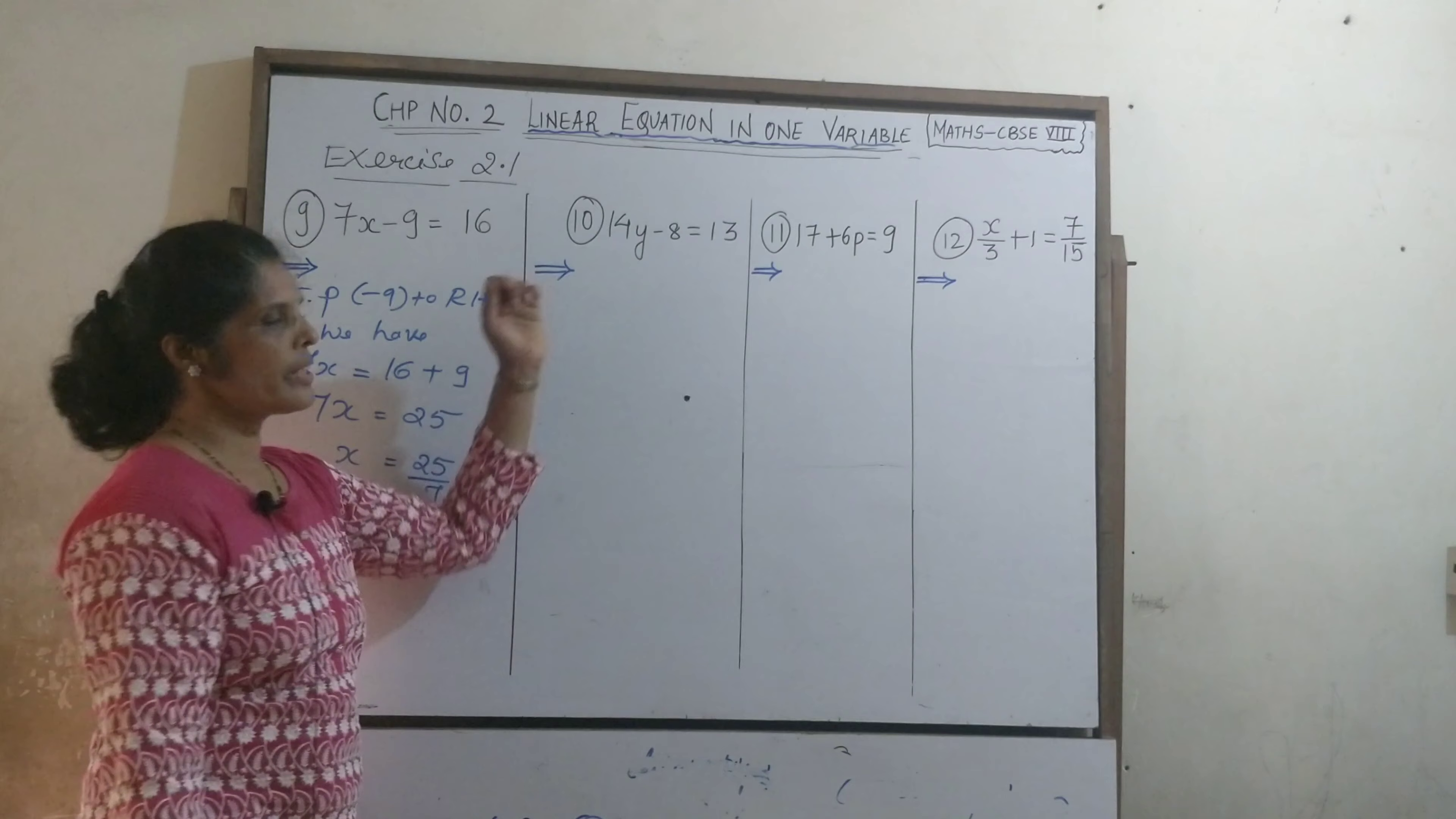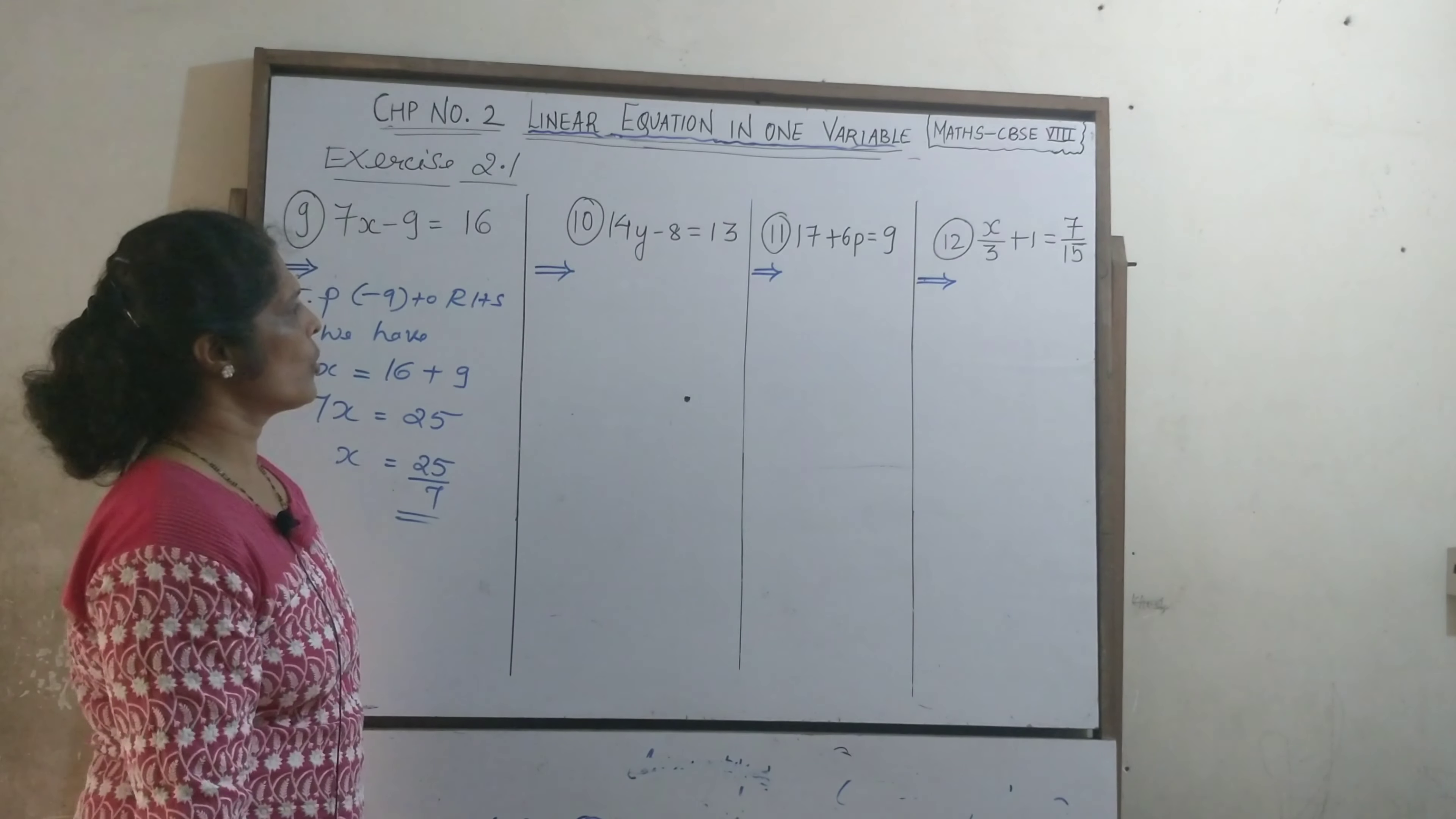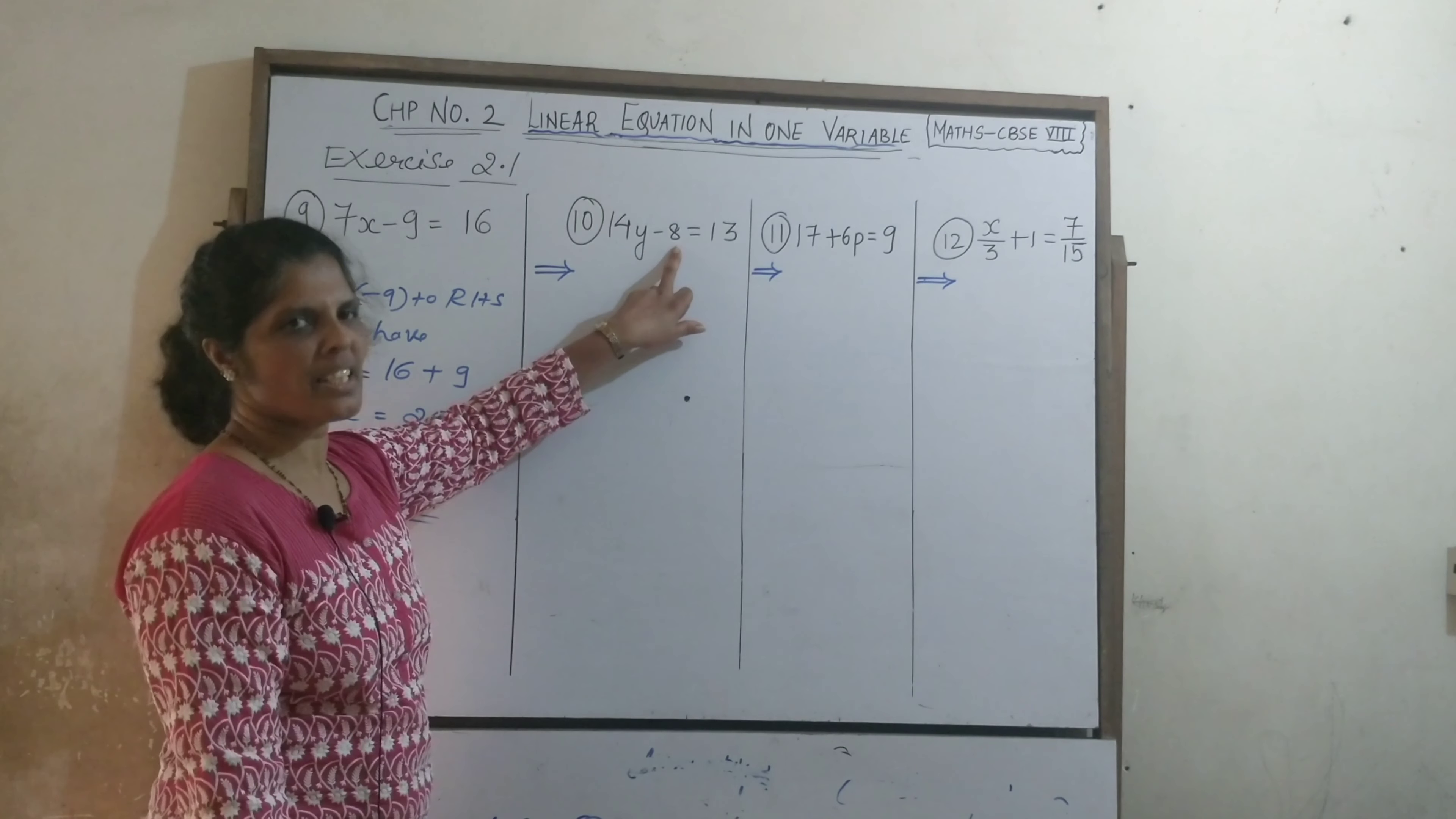Next to 10th question. Here, 14y minus 8 is equal to 13. Which one we have to transpose here? Minus 8.